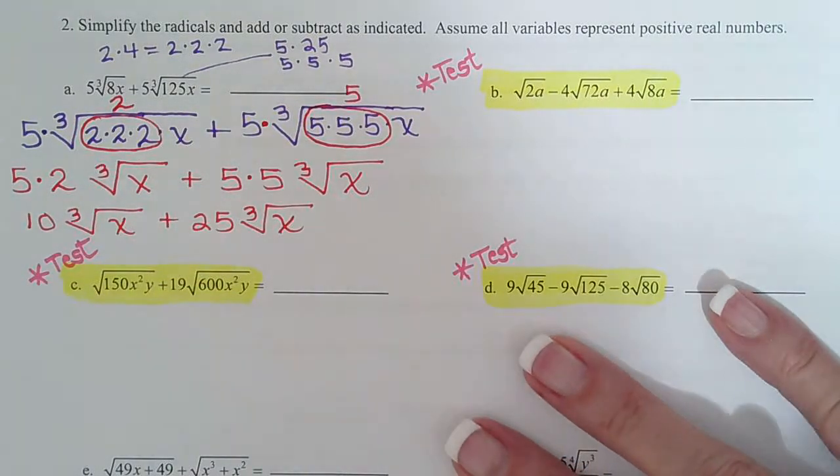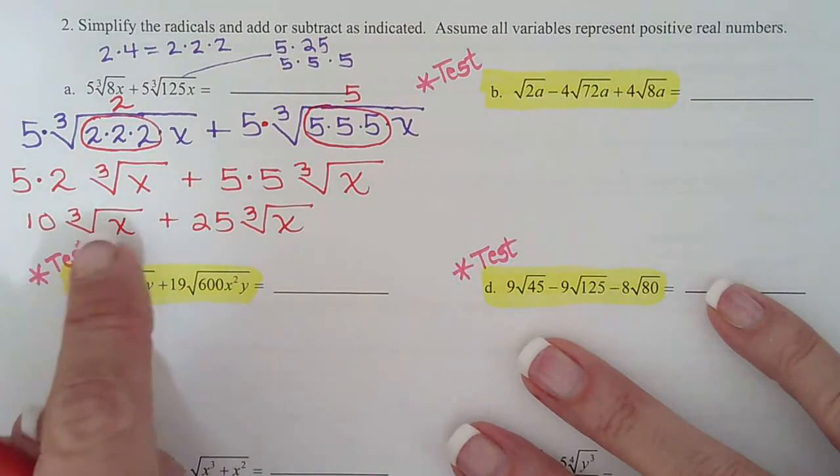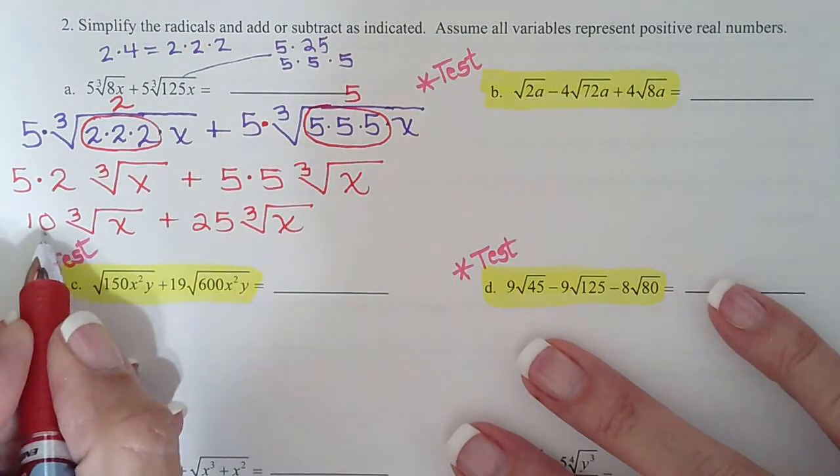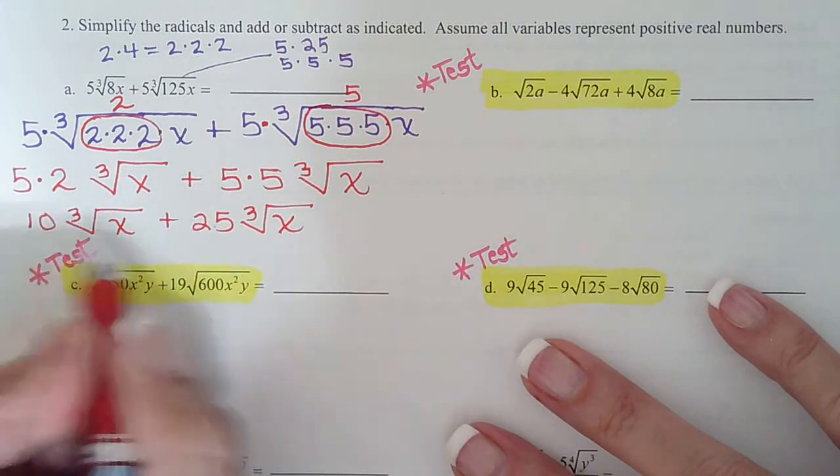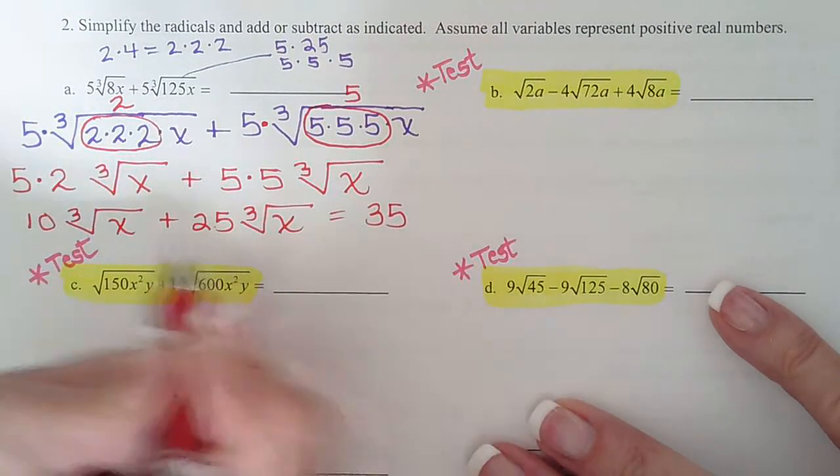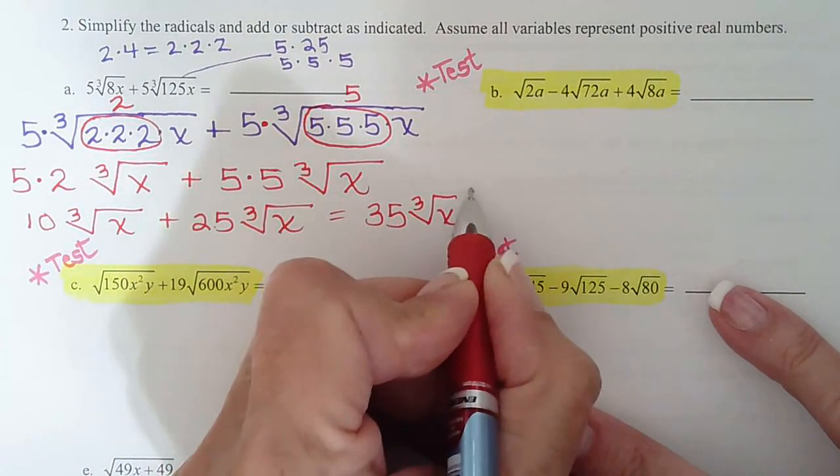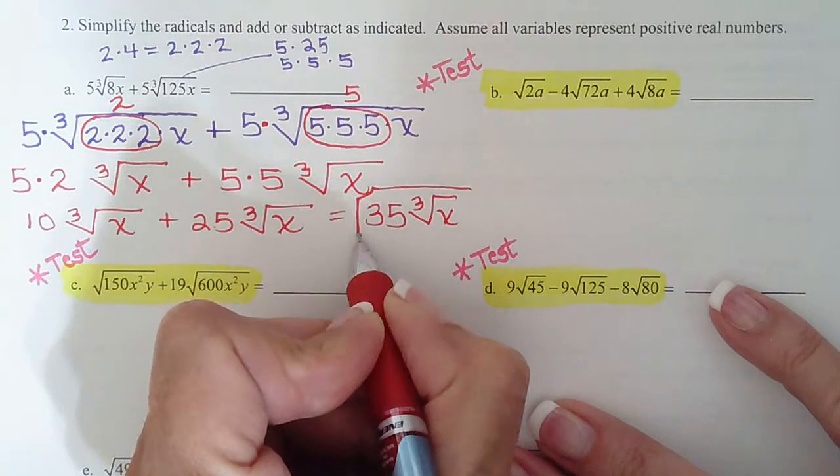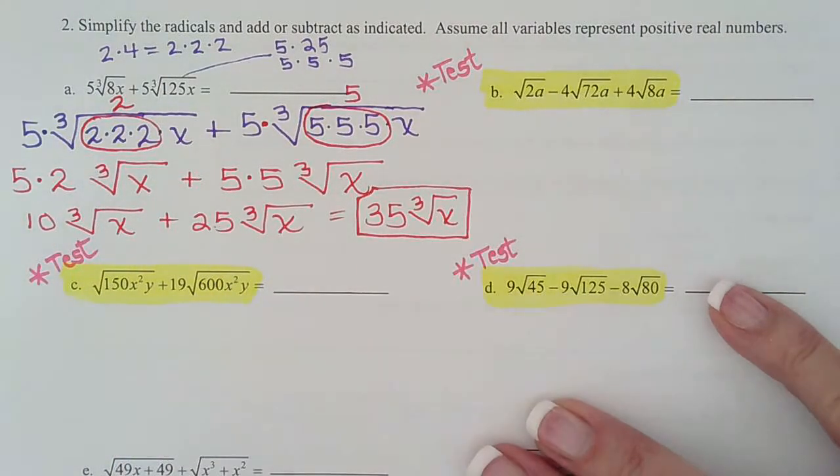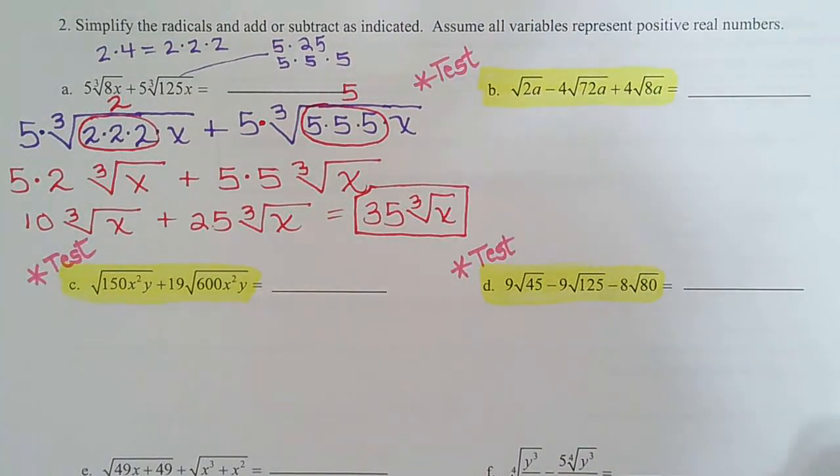And once I get them both simplified, then I look and say, hmm, are they like terms? Yes, they are. Cube root, cube root, x underneath. So I add the coefficients, 10 plus 25 is 35. And then I just tack on the radical part. So that would be 35 cube root x. So see, those aren't so bad, especially if you've practiced your 6.3 homework. Pretty easy.